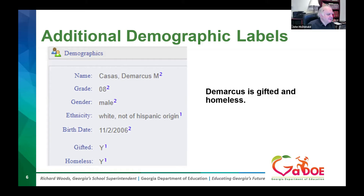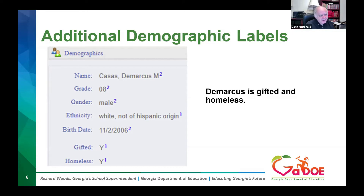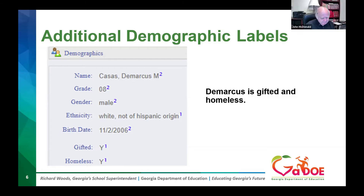Demarcus is gifted and homeless — an interesting combination. It just goes to show you every student is very unique and has a different combination of experiences.